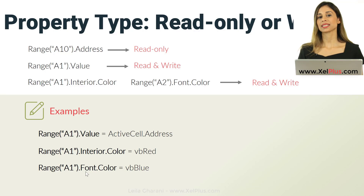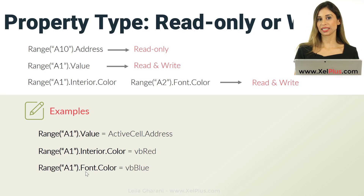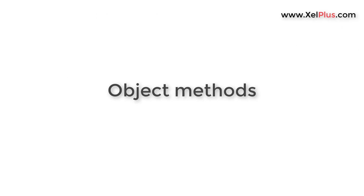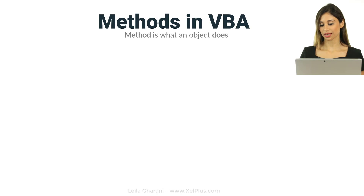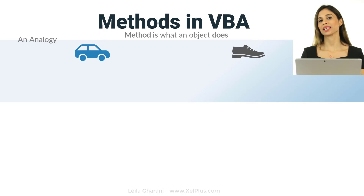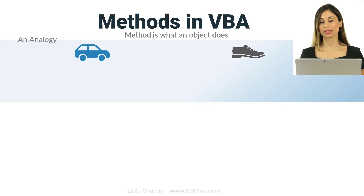Just remember that properties come after the object hierarchy and properties can have details. Now let's move on to methods. A method is something that an object does. Let's go back to our shoe and car analogy and take a look at some methods they could have.